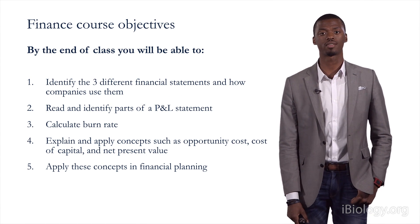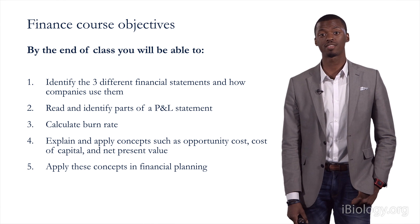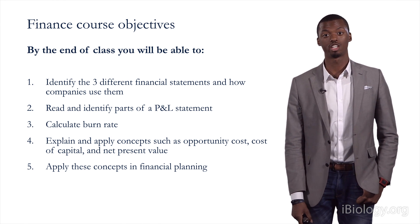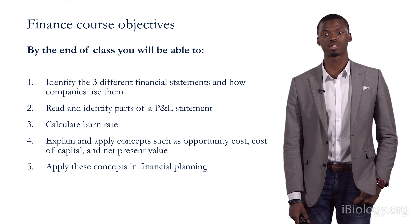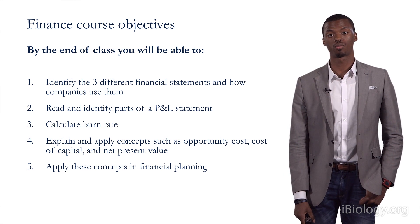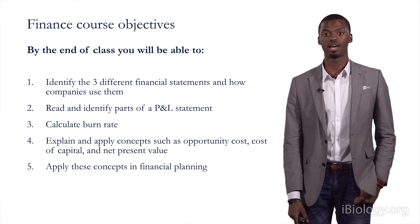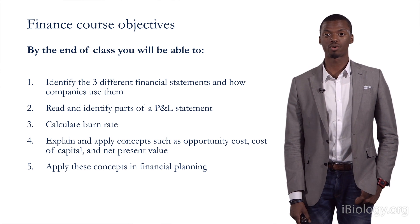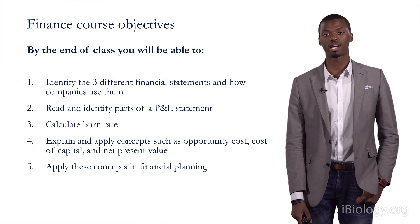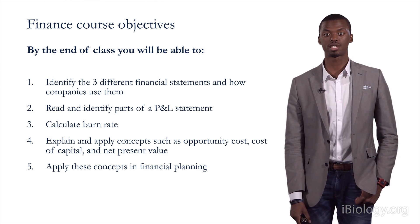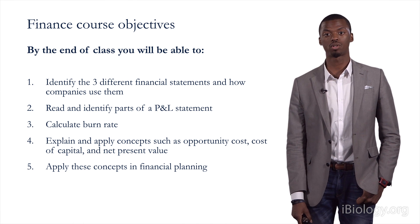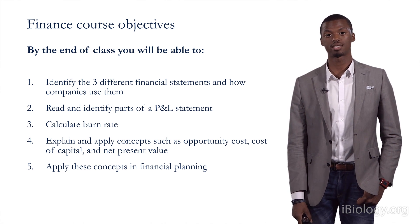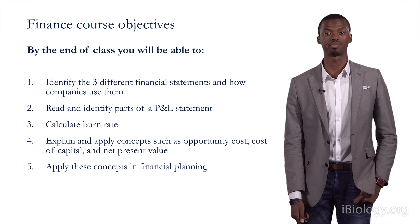Just some of the objectives. By the end of this class, you'll be able to identify three different financial statements and how companies use them, read and identify the parts of a P&L statement, calculate a burn rate, explain and apply concepts such as opportunity cost, cost of capital, and net present value, as well as apply these concepts in financial planning.